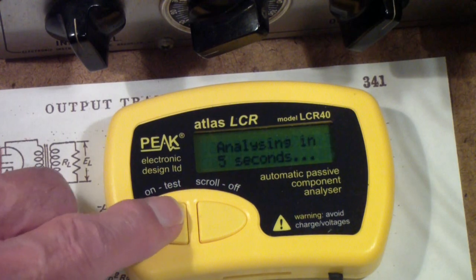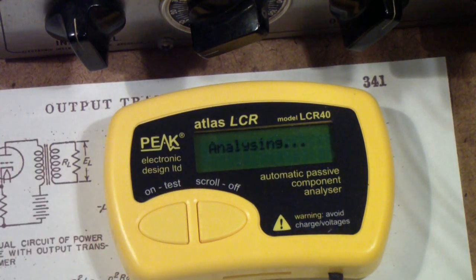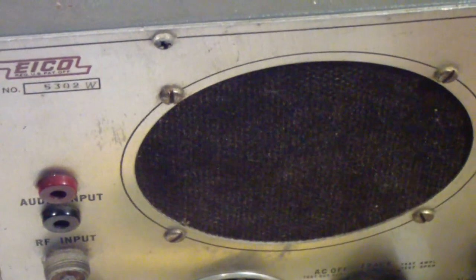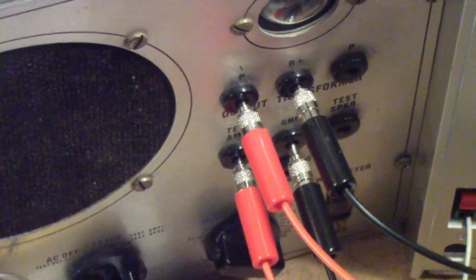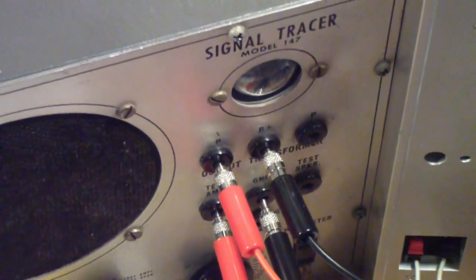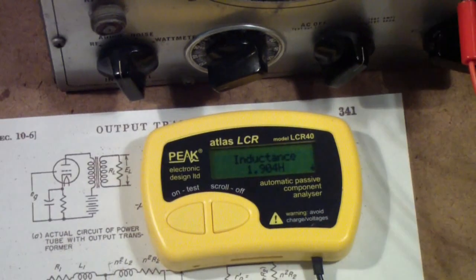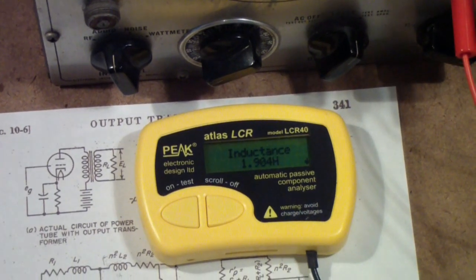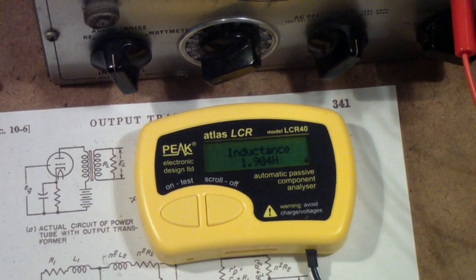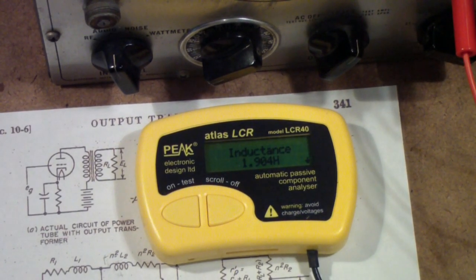So the first thing I'm doing this morning is taking an inductance measurement of a transformer. In this case, it's the transformer in this ICO signal tracer that you see there. I read 1.9 Henrys, roughly, and that's with the secondary open.